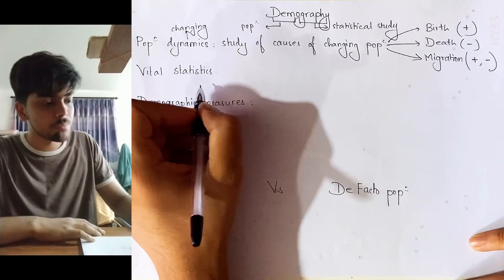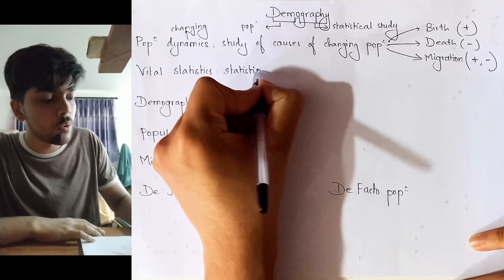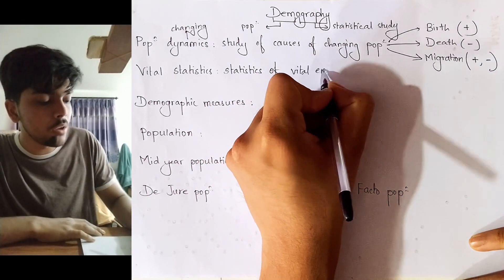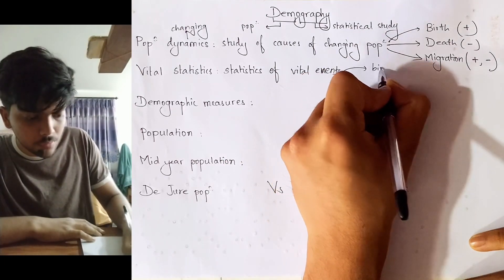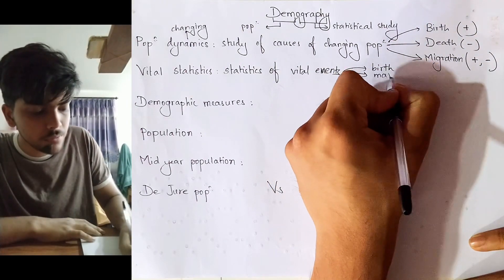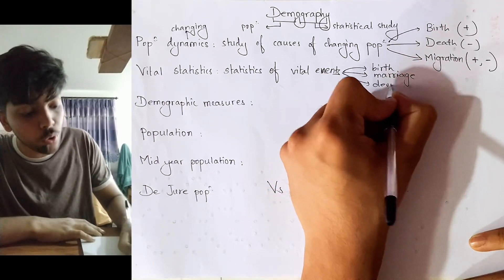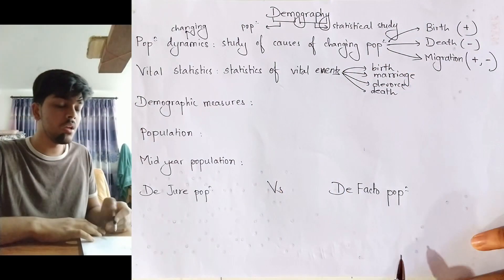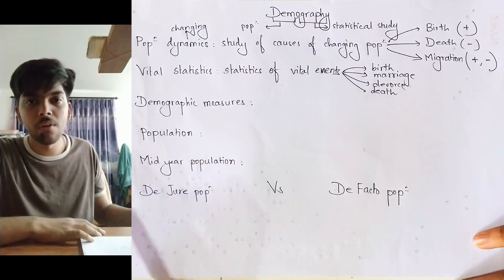Second, vital statistics. Vital statistics is the quantitative study of vital events. What is included in vital events? Vital events include birth, marriage, divorce, and death. So the quantitative measures of all these would be included under vital statistics.